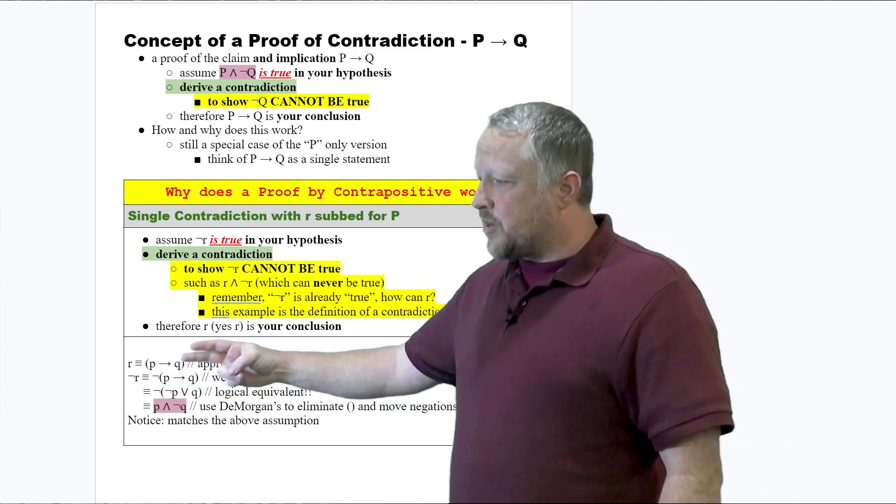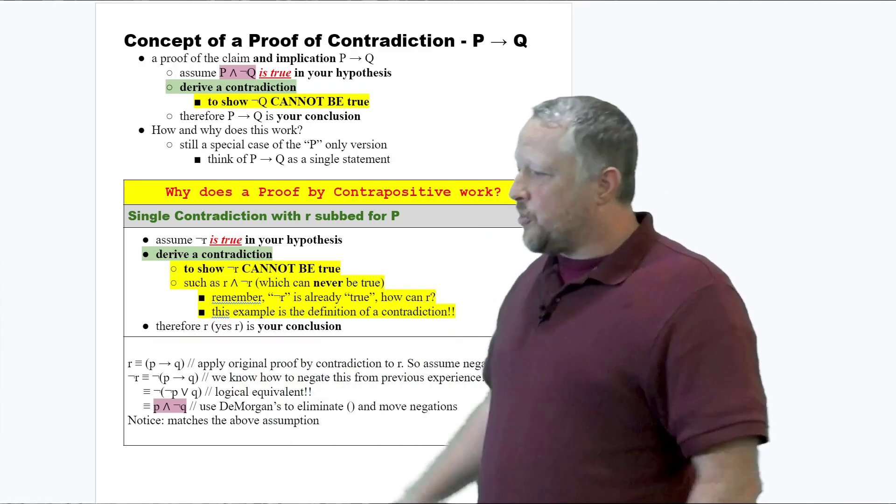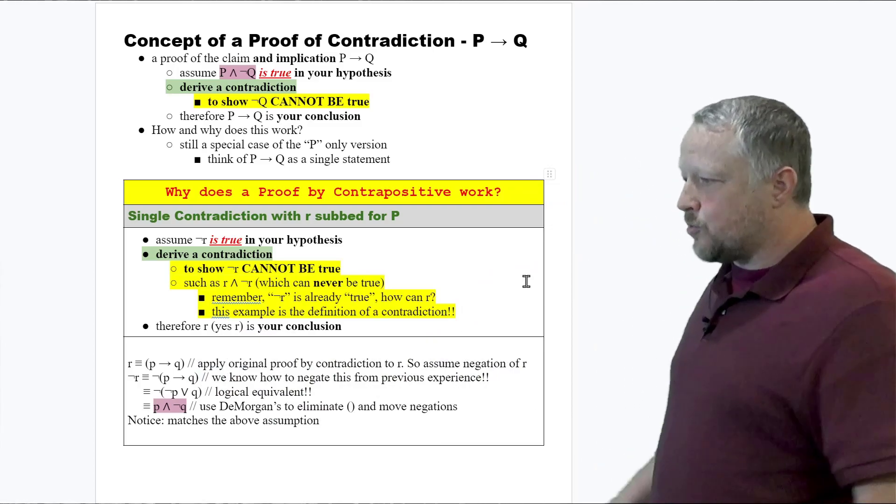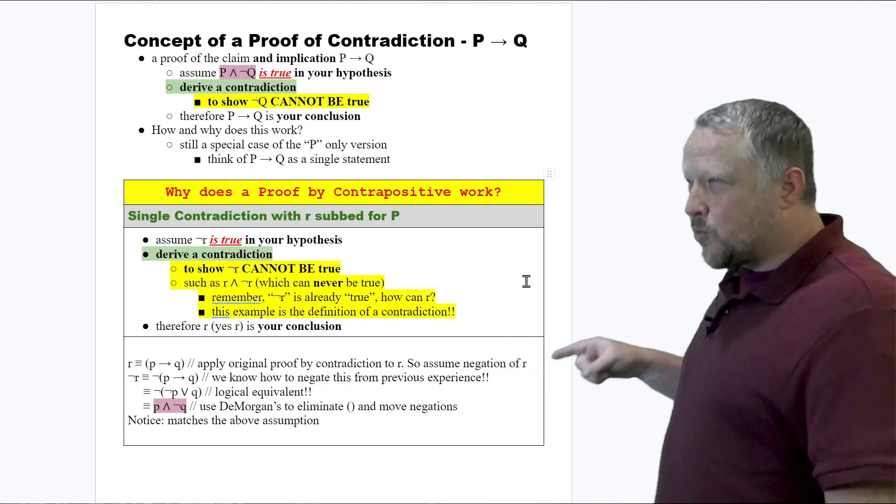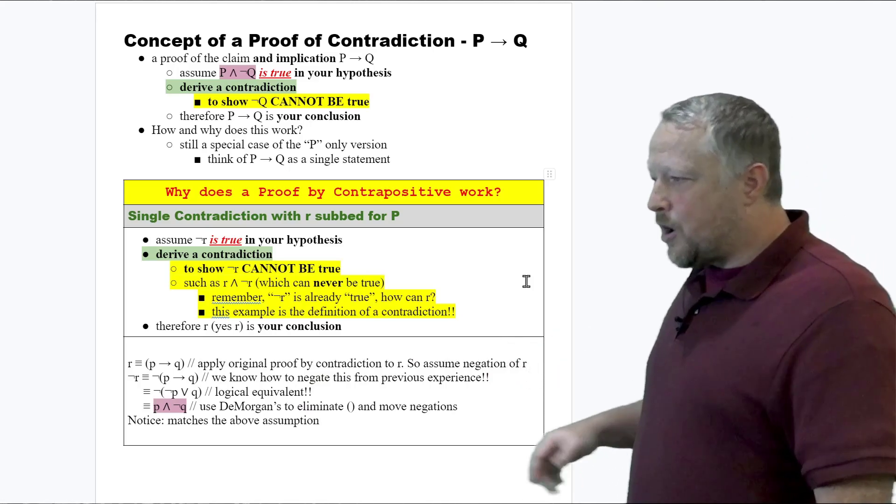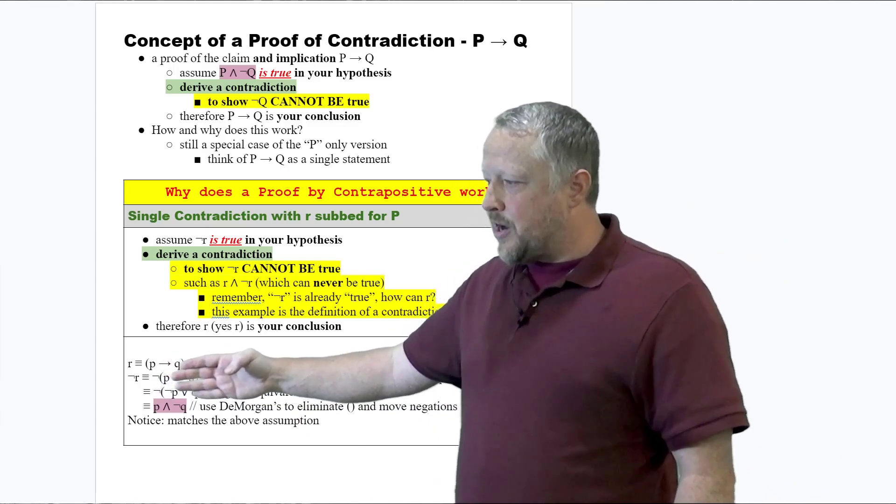Well, we're going to have R equals, and remember, this side was just P, but I've replaced that here with our P implies Q. So, that's our original proof by contradiction with R. So, we're assuming the negation of R, which is coming up next. That's how we're doing our negation here with contradiction.